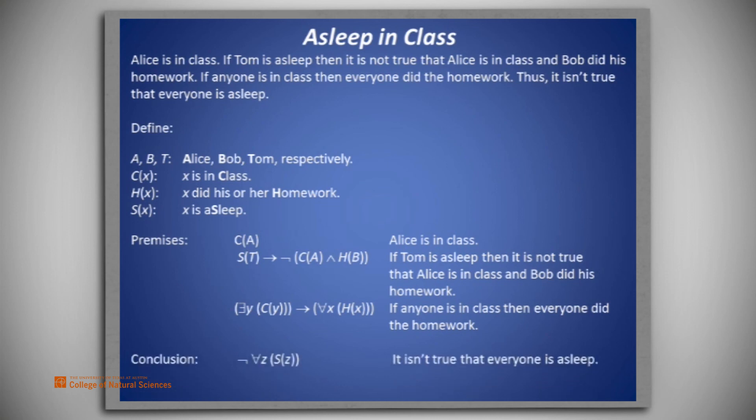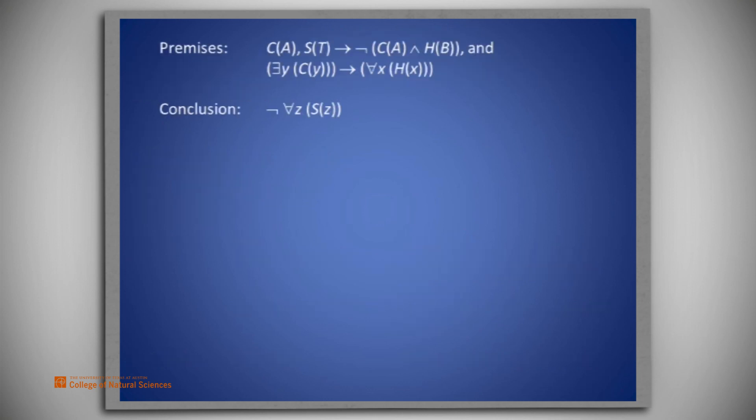The conclusion we seek is the negation of for all z, s(z) — that is, it isn't true that everyone is asleep. Symbolically, the premises are c(a); s(t) implies the negation of c(a) and h(b); and there exists a y such that c(y) implies for all x, h(x). The conclusion is the negation of for all z, s(z). So how would we construct a proof of this?